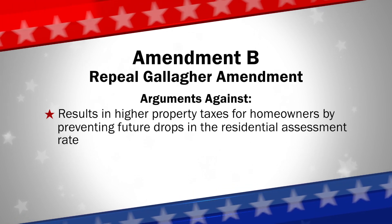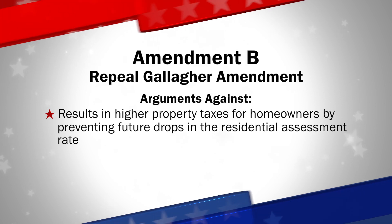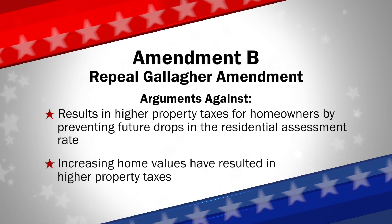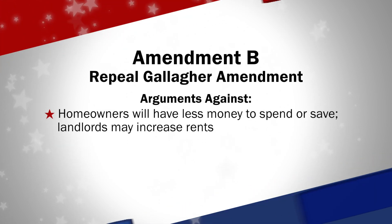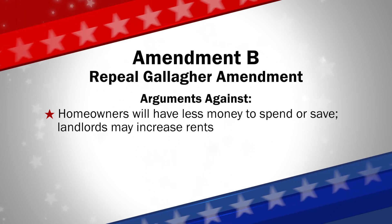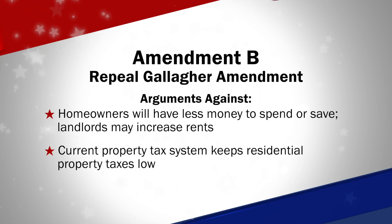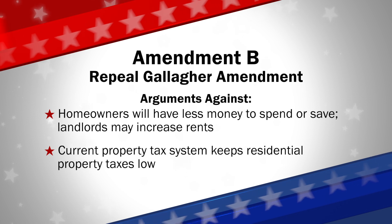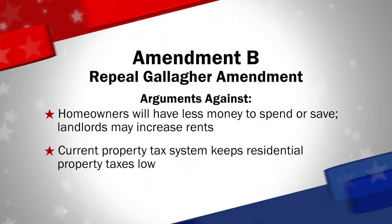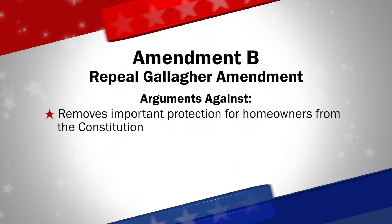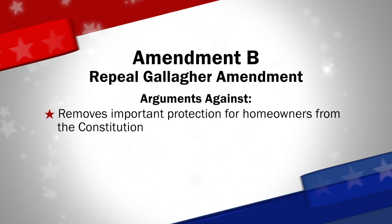Those opposed say Amendment B results in higher property taxes for homeowners by preventing future drops in the residential assessment rate. Increasing home values have already resulted in higher property taxes for many homeowners. Higher taxes mean that homeowners will have less money to spend or save, and landlords may increase rents at a time when many are already struggling to make ends meet. Opponents also say the current property tax system keeps residential property taxes low, and it prevents special interests from obtaining tax breaks at the expense of homeowners. Amendment B removes an important protection for homeowners from the Constitution. Without these protections, homeowners may end up paying an increasing share of property taxes.